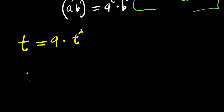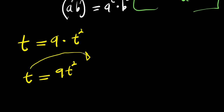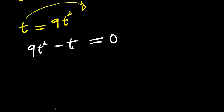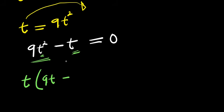So we have t equals 9t squared. The next step is to move this t across the equality sign, so it becomes negative t. You have 9t squared minus t equals 0. From here, factor out t: t times (9t minus 1) equals 0.